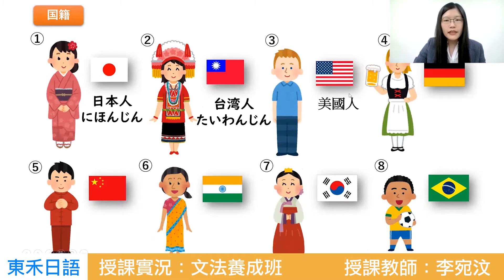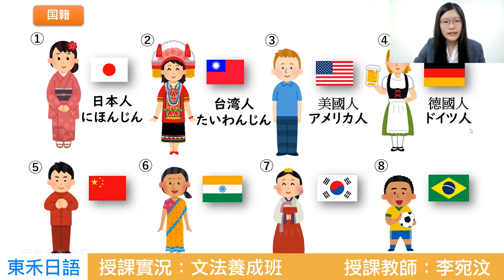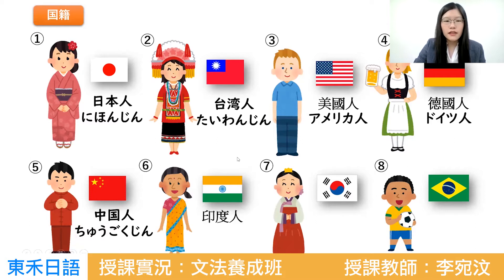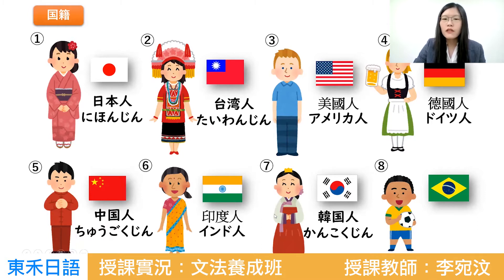下一個國籍：アメリカ是美國，アメリカ人。德國是ドイツ，ドイツ人。中国人要注意它的發音，「き」「ゅ」合在一起是拗音，加上長音，所以念「ちゅう」，中国人，又是拗音又是長音，要注意。再來韓国人，最後是ブラジル人。